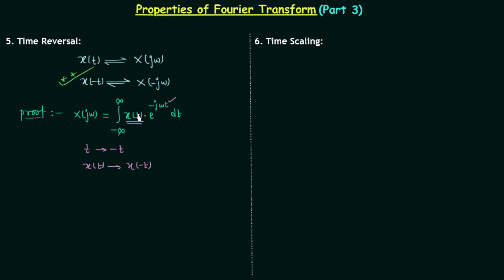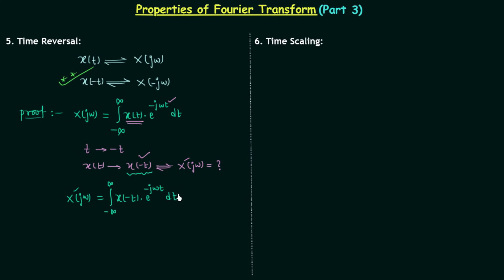The Fourier transform of the new signal x(-t) is called X(jω'). We calculate it using its corresponding time domain signal x(-t): integration from minus infinity to infinity of x(-t) multiplied by e^(-jωt) dt. Now let's assume minus t equals tau, which implies t equals minus tau, and dt equals minus dτ.